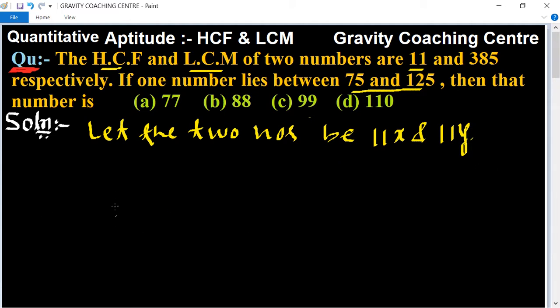So 11x times 11y equals 11 times 385. The 11s cancel, and 385 divided by 11 is 35, so xy equals 35.